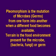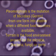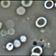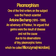Pleomorphism is the mutation of microbes, germs from one form to another when a different food becomes available. This terrain is the food environment present for the microbe, bacteria, fungi or germ to eat. The environment or terrain throughout our body can be in a normal physiological or imbalanced pathological state.